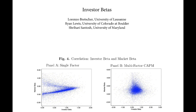We form placebo portfolios to confirm this is not mechanical. For every fund that owns a stock, we find another fund that looks a lot like it but doesn't own that stock, run the same analysis there, and find basically nothing. We can also run this with lots of other factor models, either in the second stage or in the first stage when estimating these betas, and again we don't find that it really moves things around much.